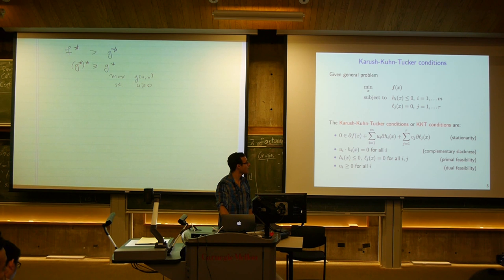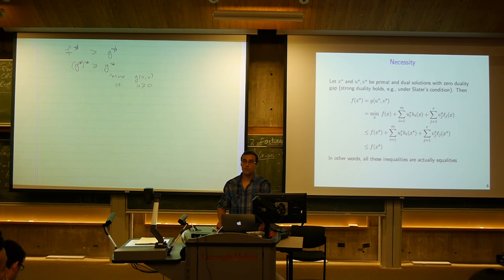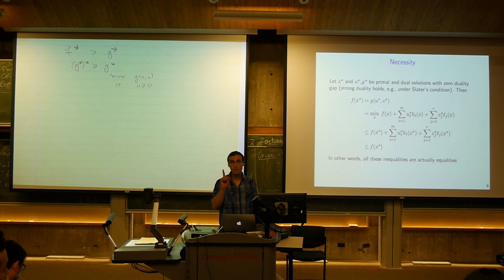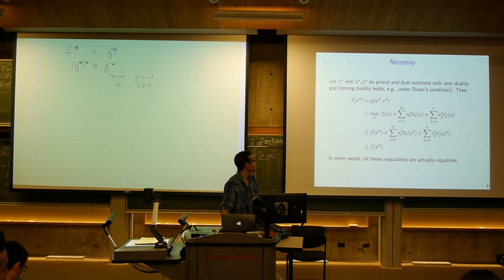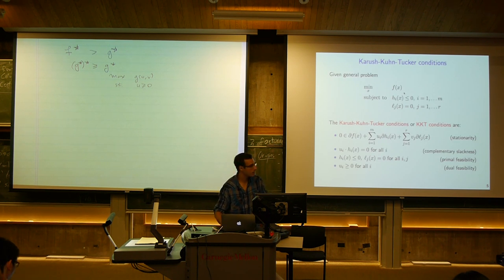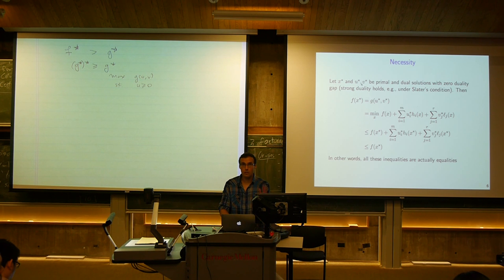Let's prove that satisfying the KKT conditions is equivalent to having optimal primal and dual solutions. First, necessity: any x*, u*, v* that are optimal must satisfy the KKT conditions, provided we're looking at primal and dual solutions with zero duality gap — f(x*) equals g(u*, v*). This is implied, for example, by Slater's condition if the problem is convex.